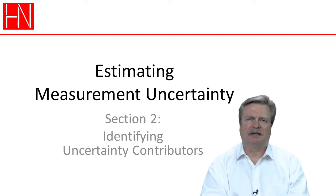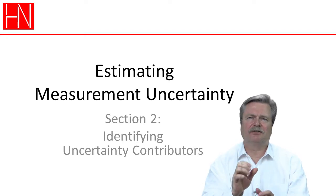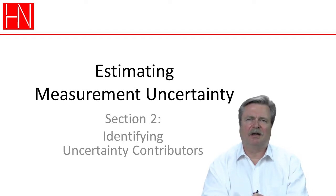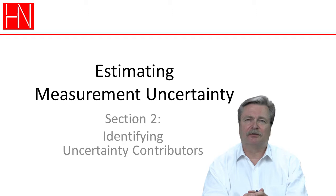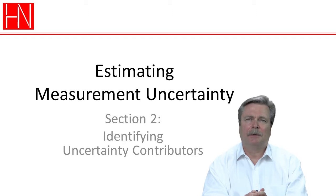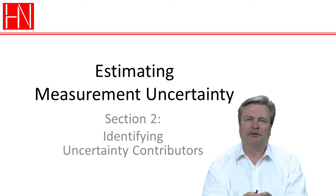You may recall that I said if we can successfully identify the three largest contributors, then our uncertainty budget will be as accurate as it can be — if we obviously do the numbers right once we've identified them. But if we cannot identify those three major contributors, then our uncertainty budget really doesn't stand a chance of expressing how good or how bad our measuring process is.